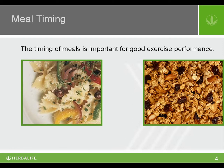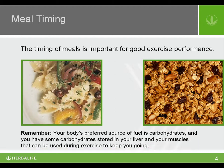The timing of meals is important for good exercise performance. Your body's preferred source of fuel is carbohydrates, and you have some carbohydrates stored in your liver and muscles that can be used during exercise. But if you usually exercise first thing in the morning, your body might be low on carbohydrates since you haven't eaten since the night before. Ideally you'd have had some healthy carbs at dinner, but it's a good idea to top off your gas tank with a small meal. If you are going to exercise soon after eating, your meal will need to be lighter.